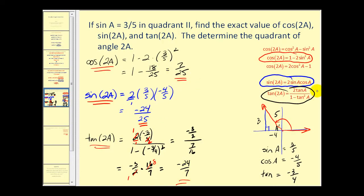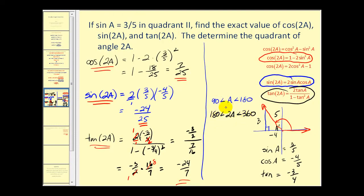The last question deals with what quadrant angle two A is in. The given angle A was in the second quadrant, so angle A is between 90 and 180 degrees. Multiplying each bound by two, angle two A is between 180 and 360 degrees — so in quadrant three or four. Since cosine two A is positive, we must be in the fourth quadrant where the x-coordinate is positive. Therefore angle two A is in the fourth quadrant.